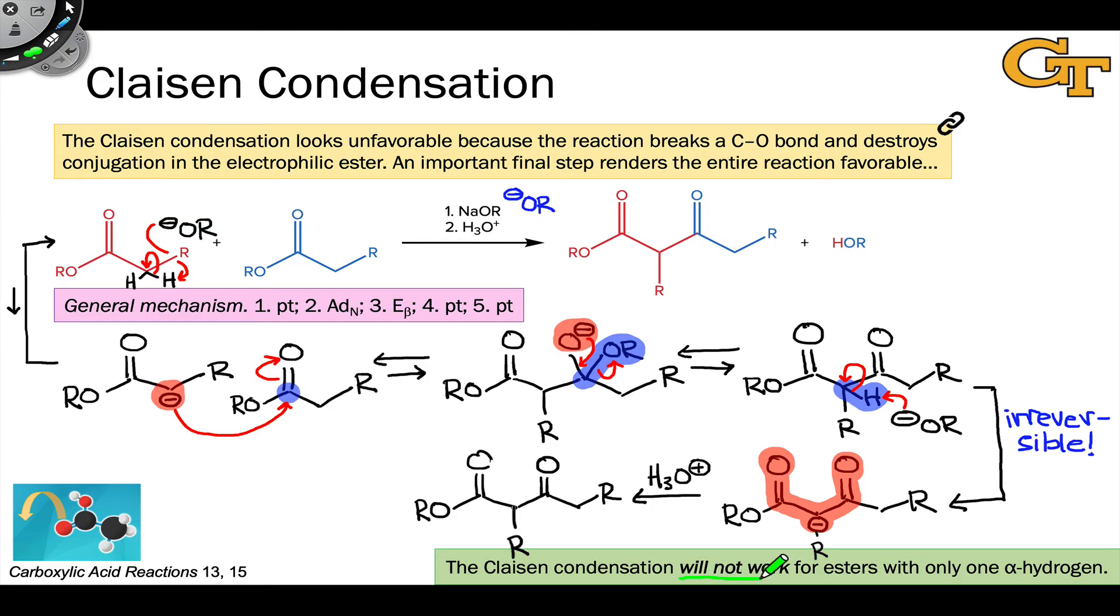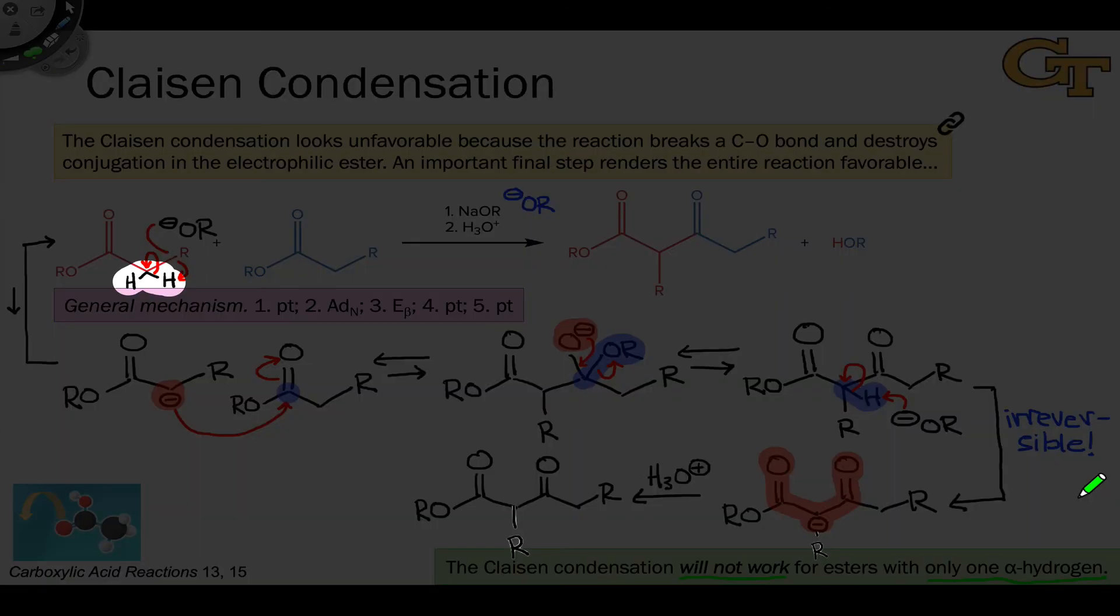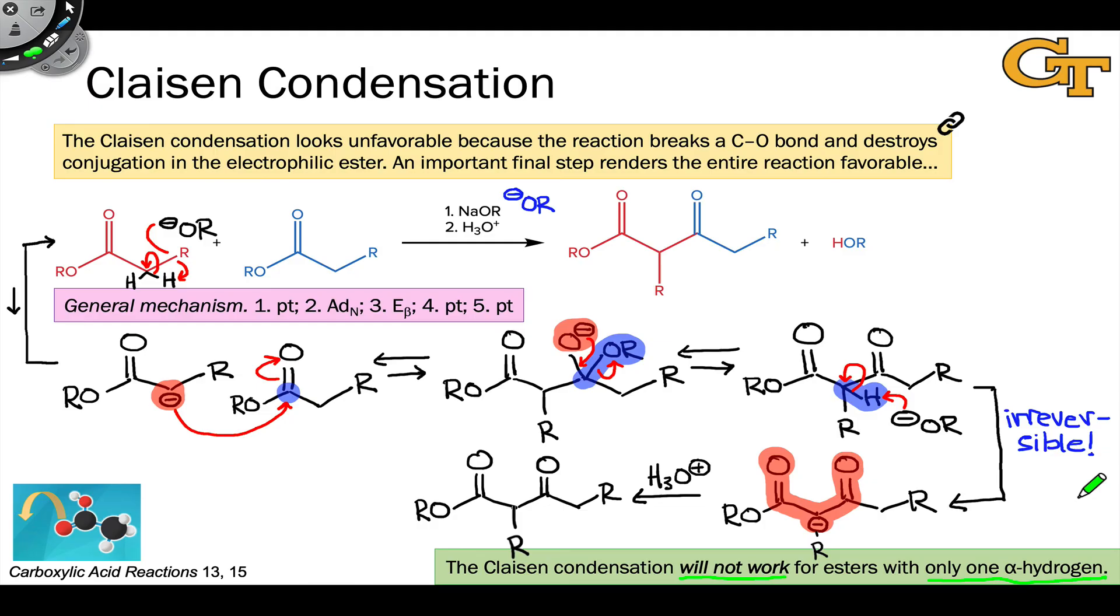The Claisen condensation will not work for esters that have only one alpha hydrogen. Even though we can remove that alpha proton to form an enolate, the enolate will not go completely to beta-ketoester product. Keep this in mind because it's a key constraint or key limitation on the Claisen condensation. Our nucleophile must have at least two alpha hydrogens.